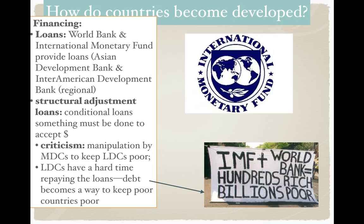Sometimes these conditions are very logical and good — for example, you can no longer give arms to terrorist groups in your country, or you must sign an agreement to limit industrial pollution, and then in turn we will provide the money. It often seems good, typically done with good intentions. But a lot of people criticize the IMF and the World Bank, accusing them of just keeping the rich rich and the poor poor.